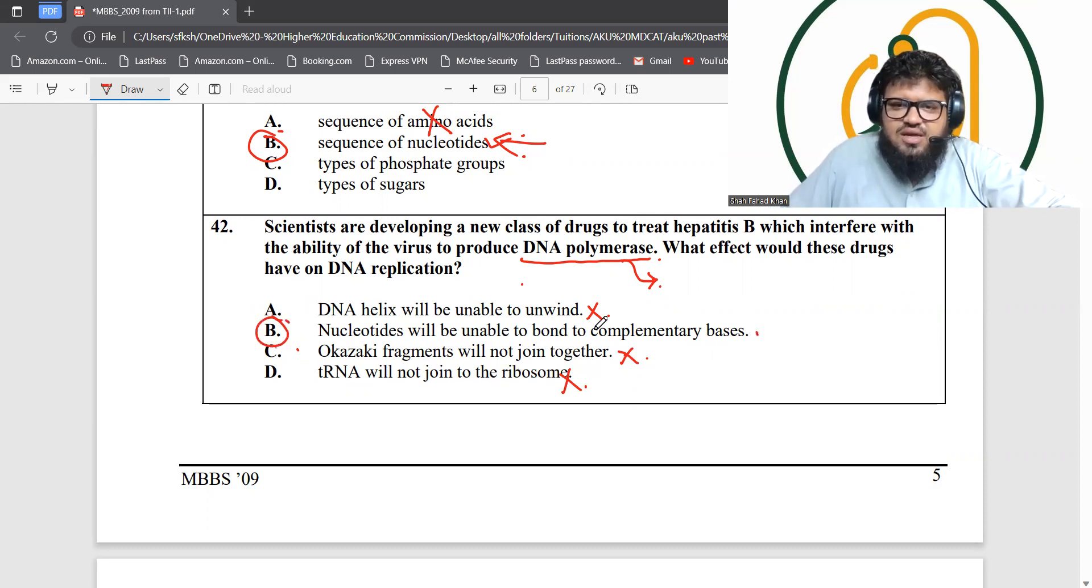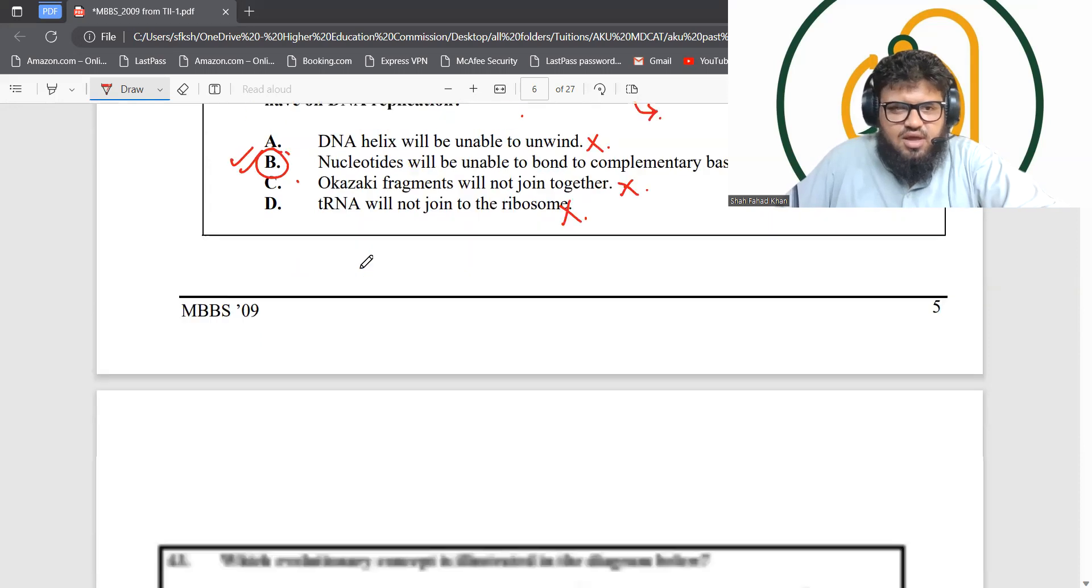But remember, the formation of hydrogen bonds between complementary base pairs is a spontaneous process and doesn't require an enzyme or energy. Still, by exclusion, we carry option B as the correct answer.